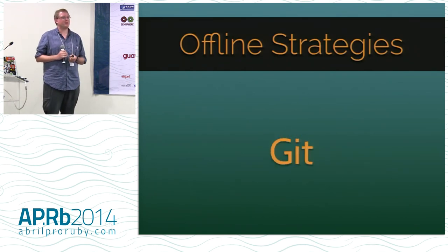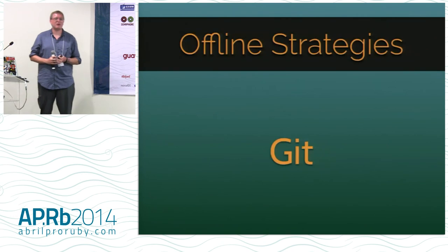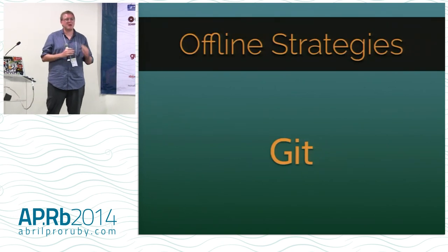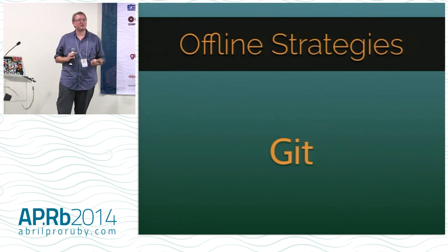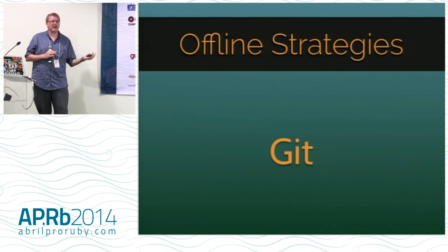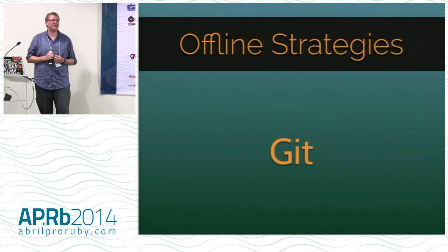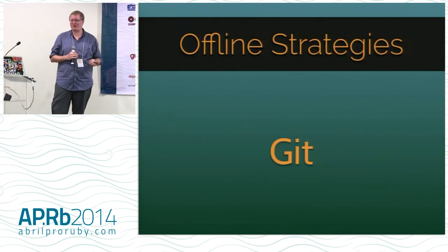Git is another very popular offline strategy — you remember each version of the document or project and can derive changes from each version. But there's still a lot of manual merging with Git. You can work around this using convergent replicated data types — CRDTs — which is way out of scope for today, but find me later and I'll talk your ear off about them. They're really easy to merge and computers can merge them deterministically.